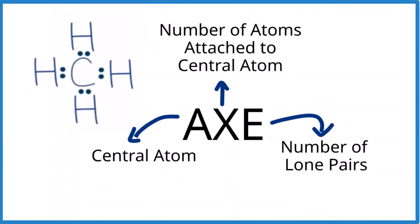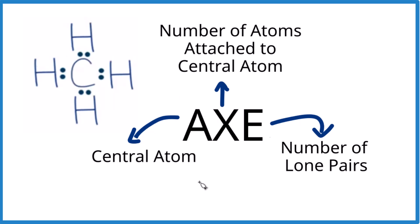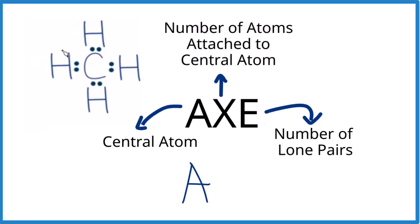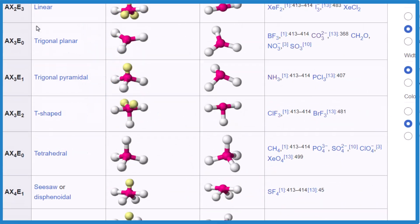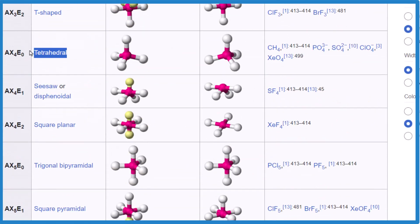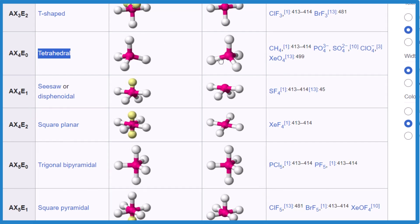Let's do another. Pause and figure out the AXE notation for methane, CH4. Carbon is the central atom, A. X, we have one, two, three, four bonded atoms. So X is 4. E, we don't have any lone pairs. These are all between atoms, so these are bonded pairs. E could be E0. Sometimes people don't write the E and just call it AX4. AX4E0 is the tetrahedral molecular geometry.